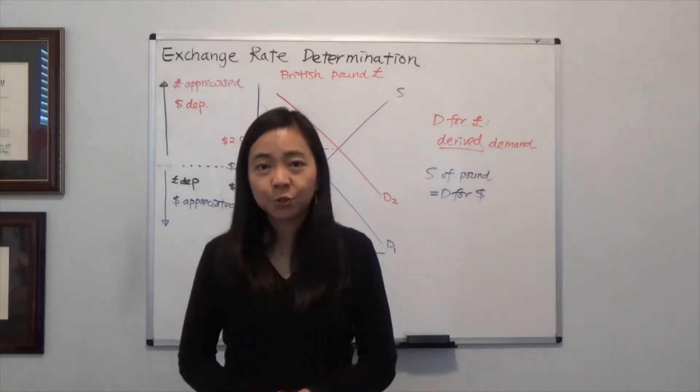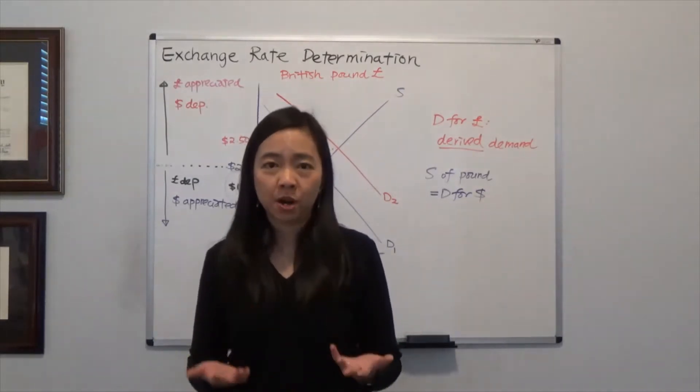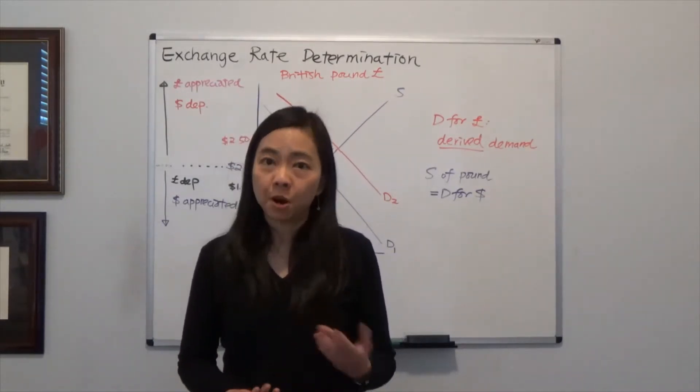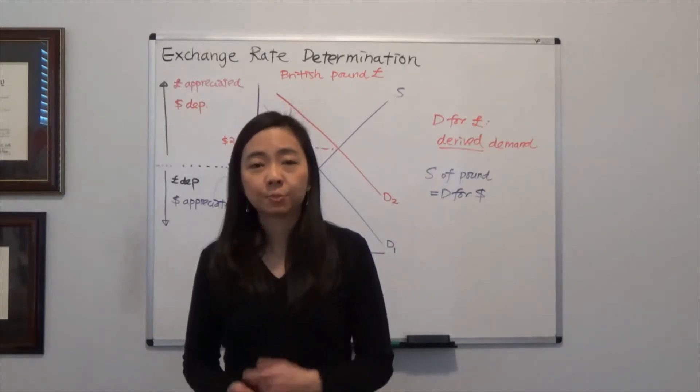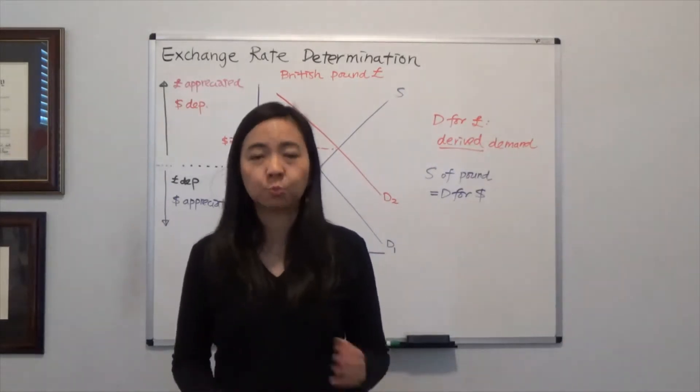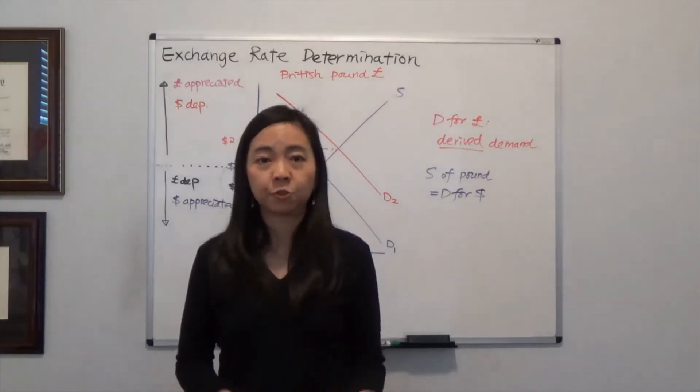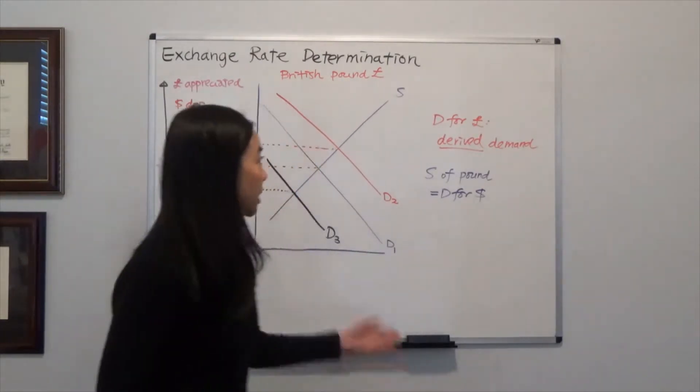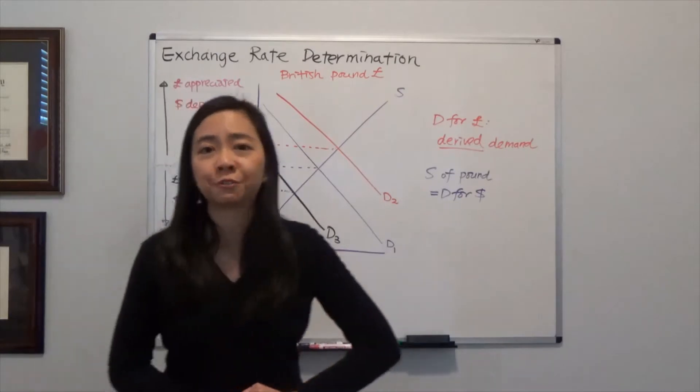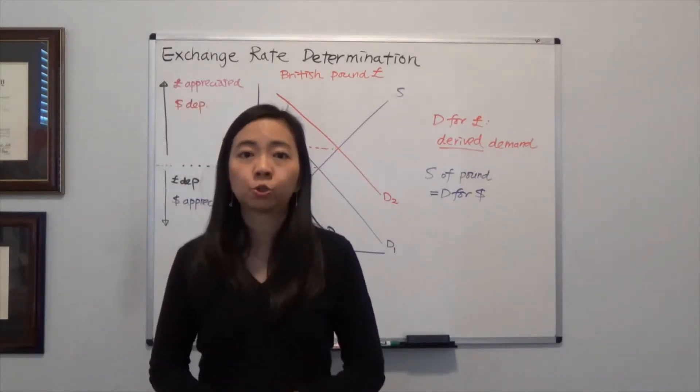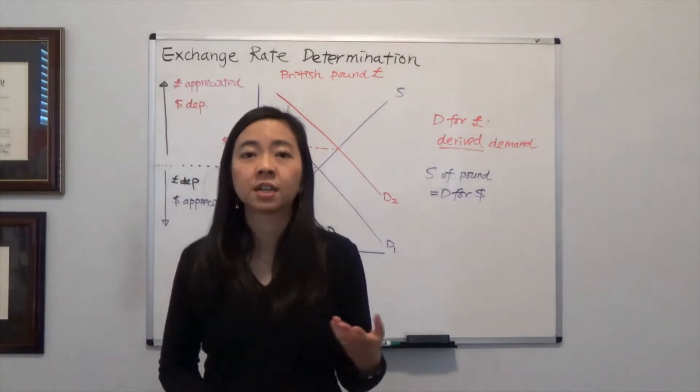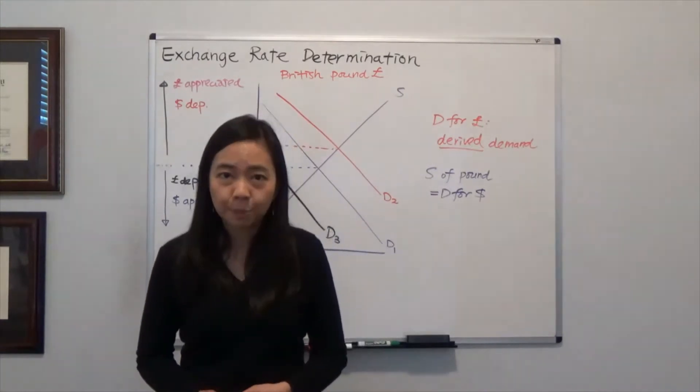Before we dive in, think about the market for apples or oranges. The price of an apple can change because of a shift in the demand curve, the supply curve, or both. Exchange rate determination is no different. We're going to treat foreign currency as a commodity, just like an apple or an orange.